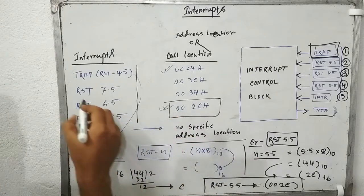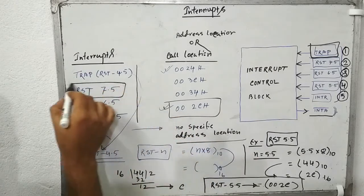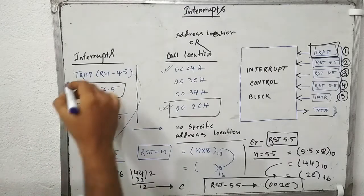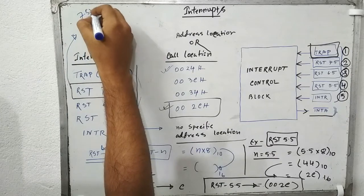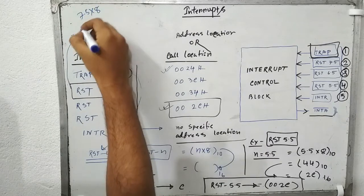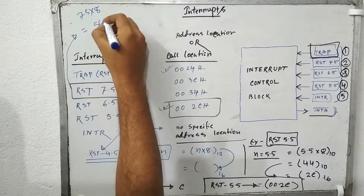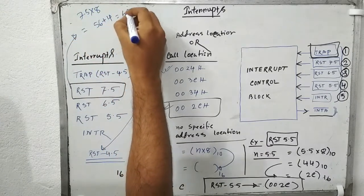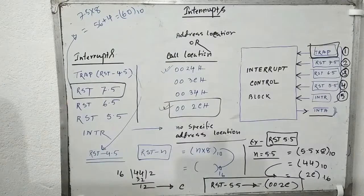Now let's try RST 7.5. RST 7.5: N is 7.5, so 7.5 × 8 = 60. That is our decimal value. Now convert 60 into hexadecimal.